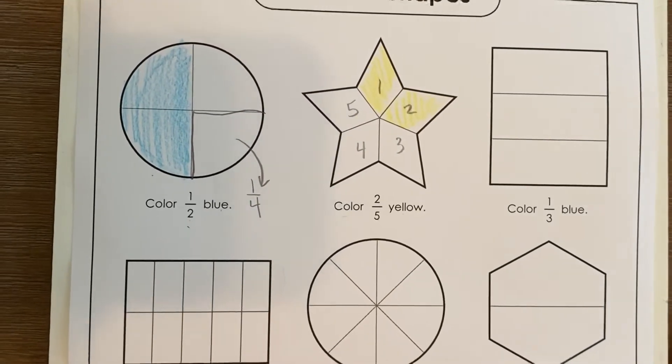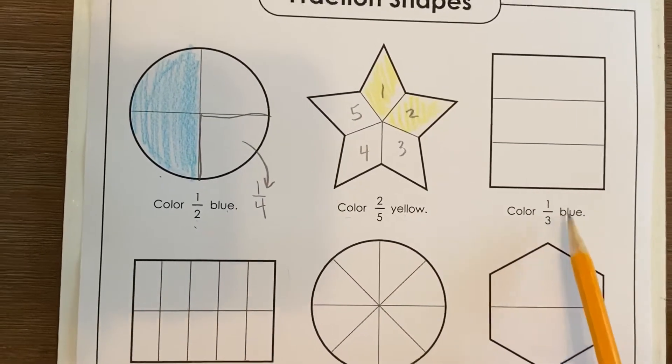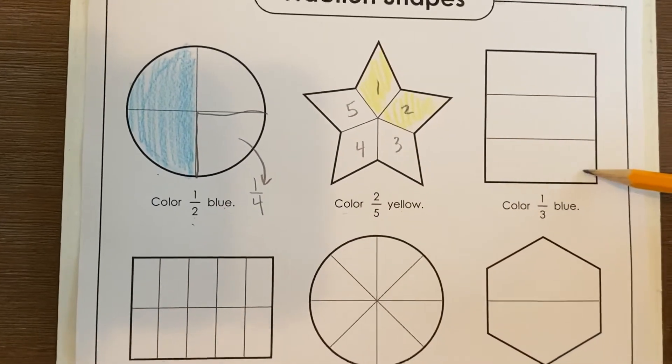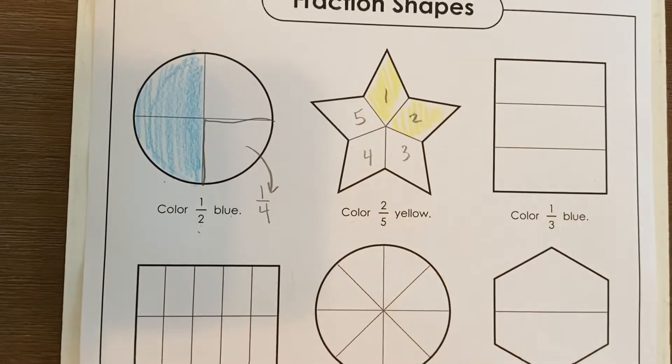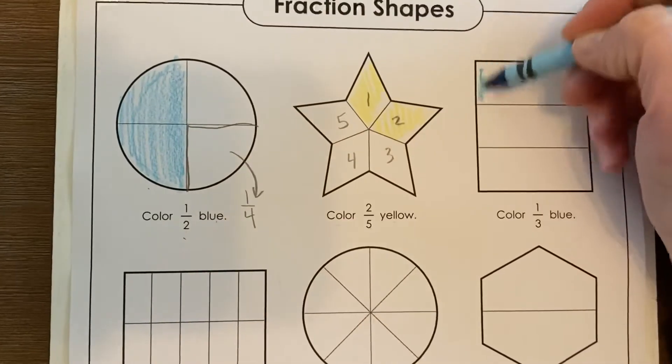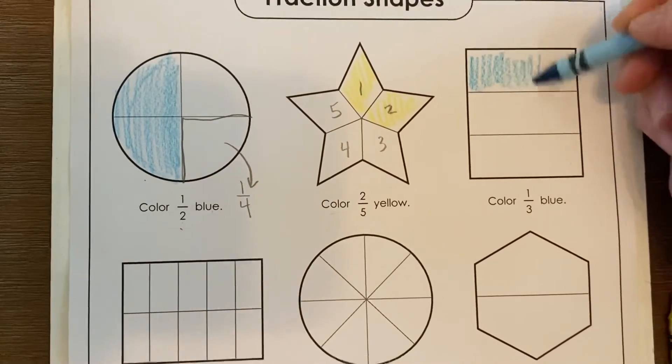This one says color one-third blue. One, two, three pieces. Aha, they didn't try to trick us in this one. One-third blue.